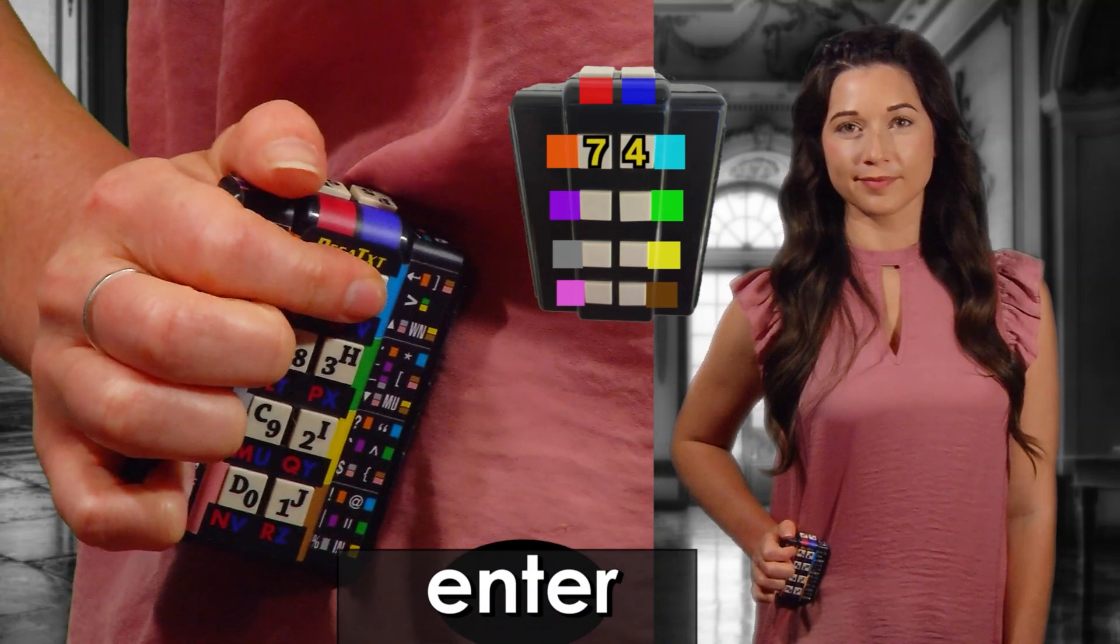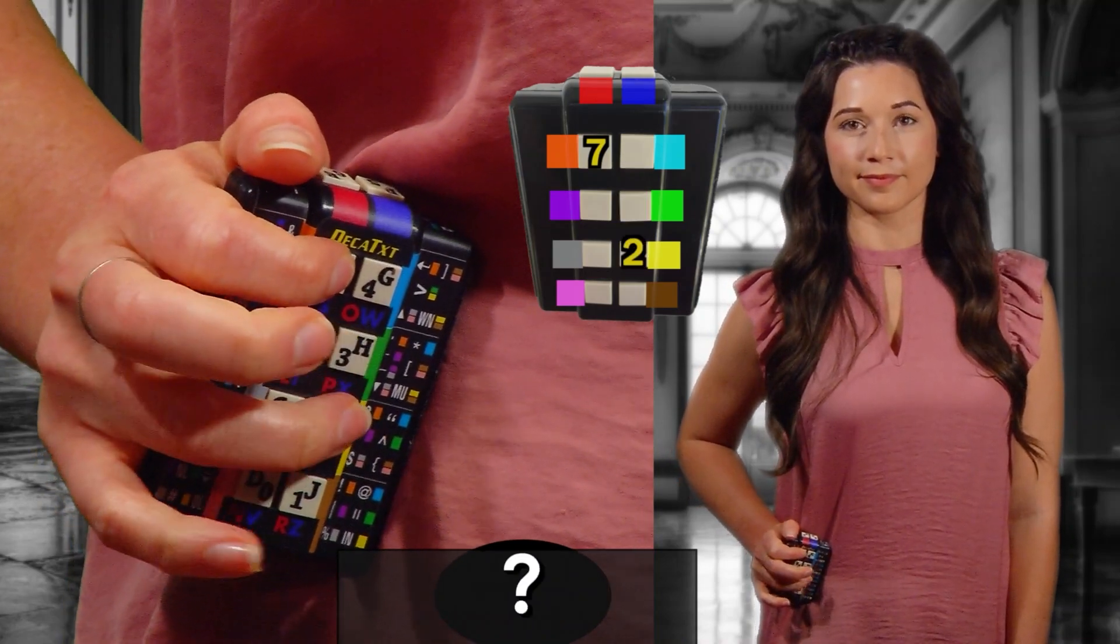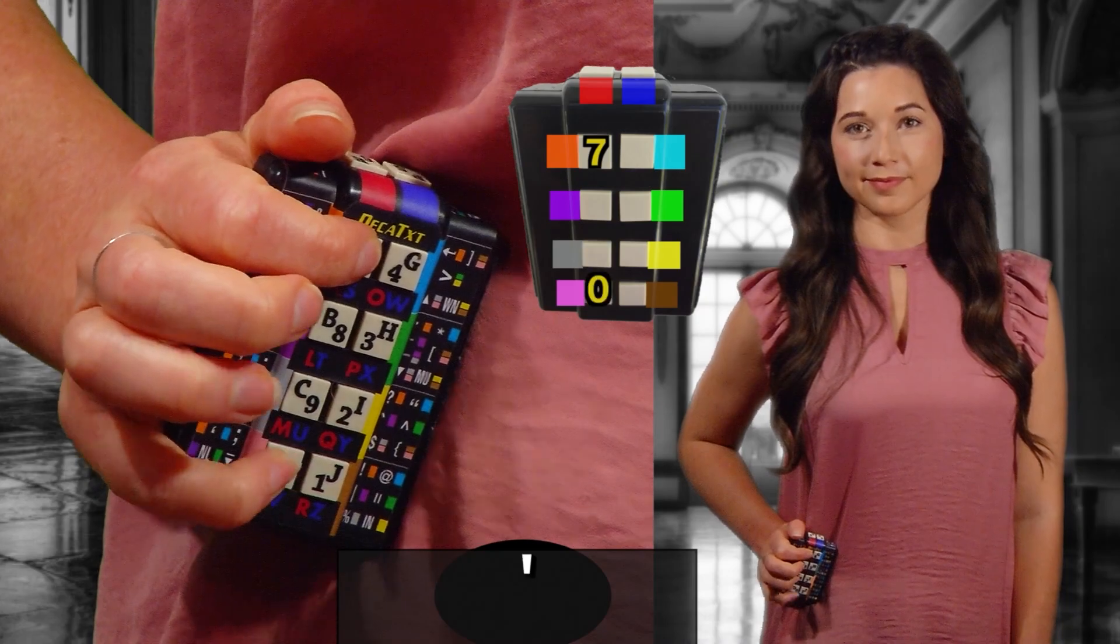Use orange key number 7 for common punctuation, including enter, period, question mark, exclamation point, tab, comma, apostrophe.